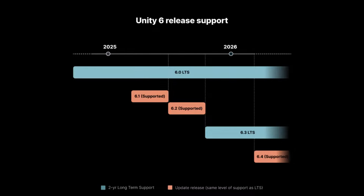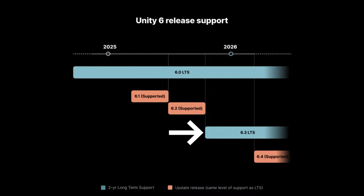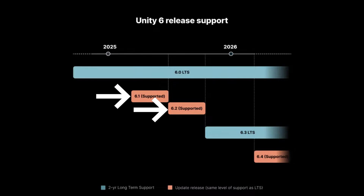Now that doesn't mean Unity 6.0 doesn't have long-term support — that is going to continue to have long-term support for the two years it would normally have. Instead, these minor incremental ones like 6.1 and 6.2 will have this supported status. Later this year, Unity 6.3 will be released as another LTS, another long-term supported version with full two-year support. The plan is to release an LTS version annually going forward, so you'll have these long-term support milestones at 6.0 and 6.3, and incremental steps like 6.1 and 6.2 supported while they are current.